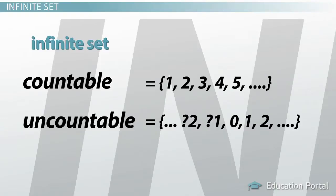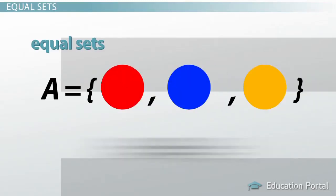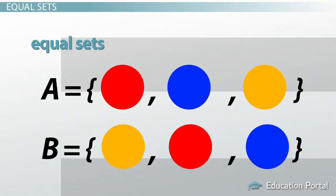Equal sets are those that have the exact same elements in both. Let's set A = {red, blue, orange} and set B = {orange, red, blue}. Then set A equals set B. We can say set A equals set B because they have the same elements — red, blue, orange — even though they are not in the same order.